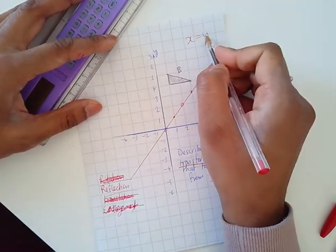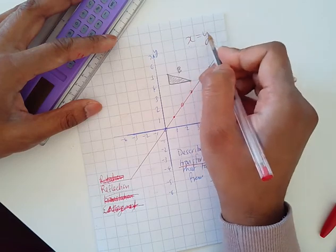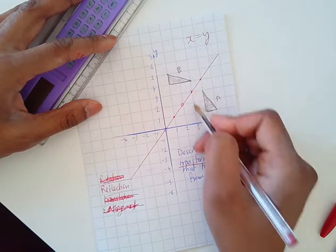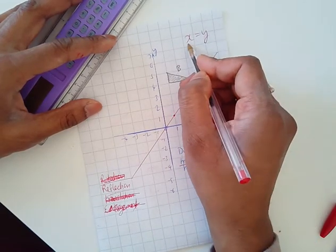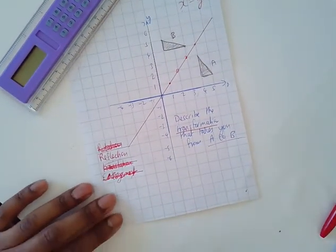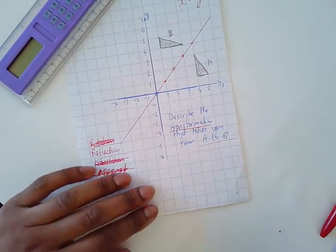When x is 1, y is 1. When x is 2, y is 2. When x is 3, y is 3 as well. So to get marks now, I'd have to say it's a reflection - that's one mark.